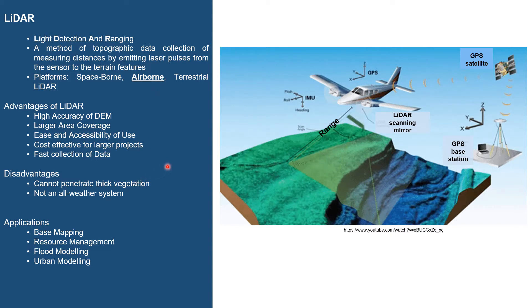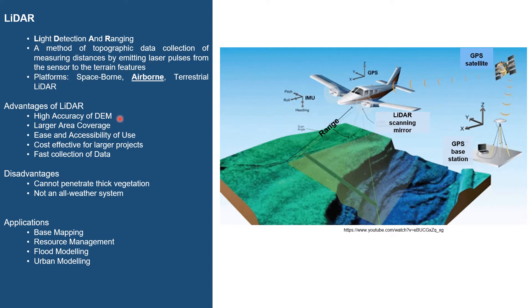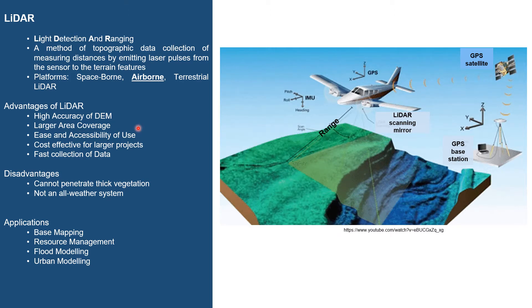Limitations from conventional ground surveys — such as the use of transits, theodolites, and other traditional terrain data collection methods — paved the way to develop this technology. At present, LiDAR is often used for its high accuracy, since it emits millions of laser pulses and provides the location of each point with much precision. This mode of terrain survey is also cost-effective for larger projects as it covers a vast area in a shorter period of time. Since LiDAR can be mounted on different platforms, areas inaccessible by land, air, or water can now be surveyed. Furthermore, since LiDAR is an active type of remote sensing — meaning it has its own source of illumination — it can be used either day or night.